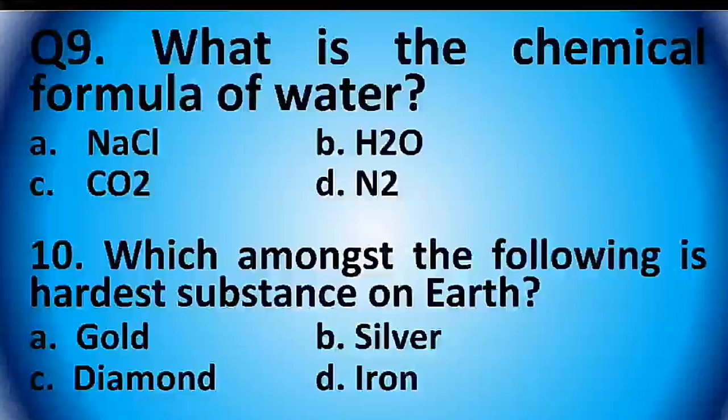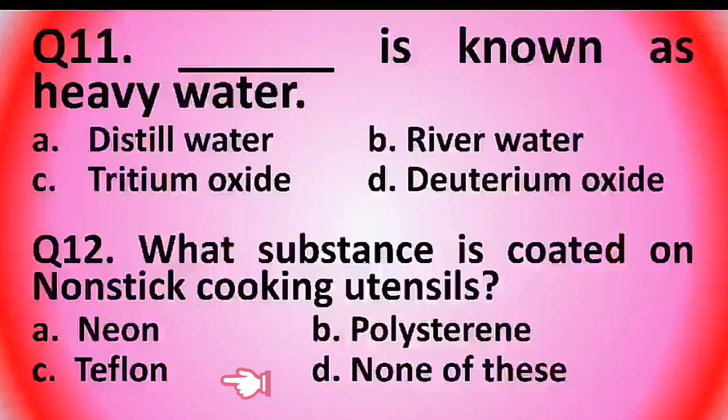Question 10: Which amongst the following is the hardest substance on Earth? Options are: gold, silver, diamond, or iron. The answer is option C: diamond.